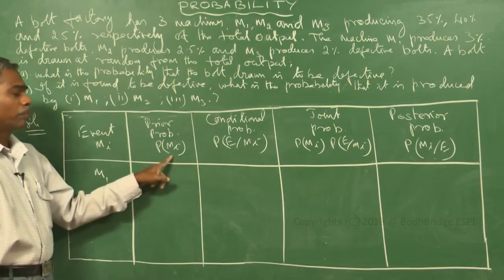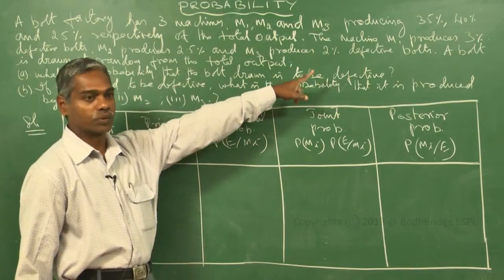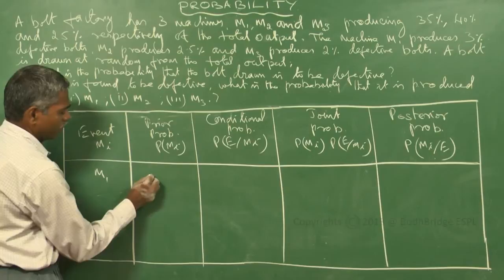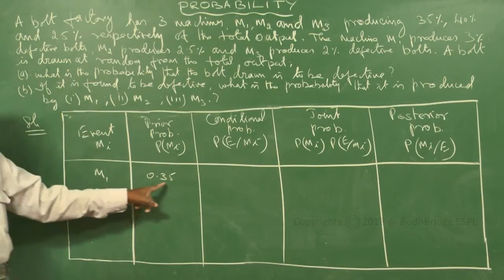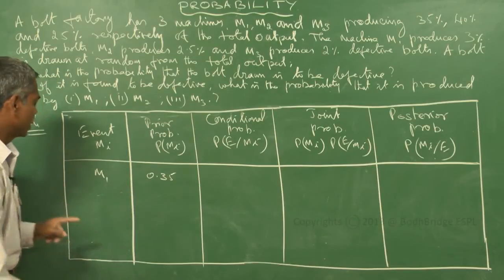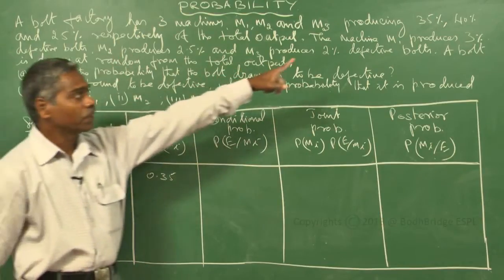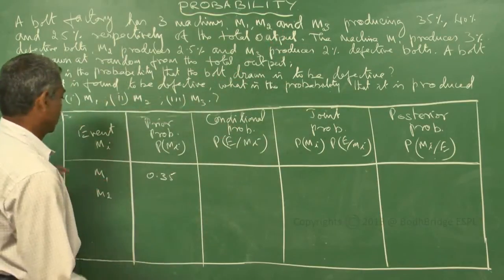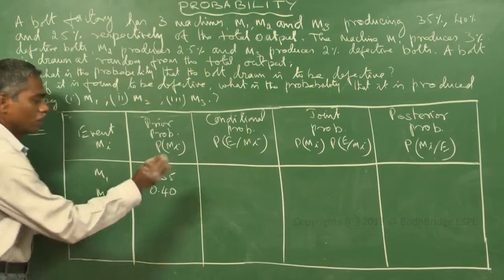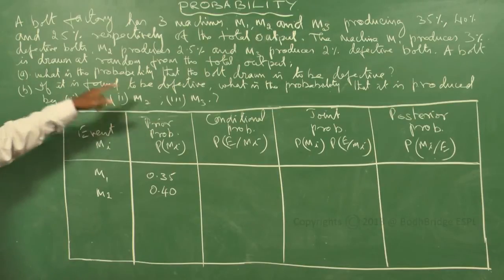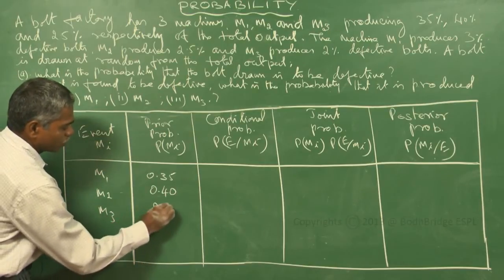Prior probability of M1: M1 produces 35% of total output, so P(M1) = 35/100 = 0.35. For event M2, machine M2 produces 40% of total output, so P(M2) = 0.40. Machine M3 produces 25%, so P(M3) = 0.25.